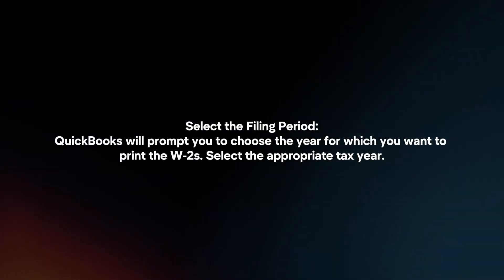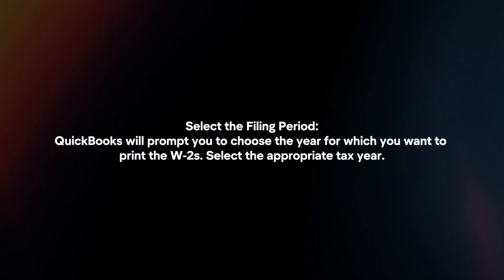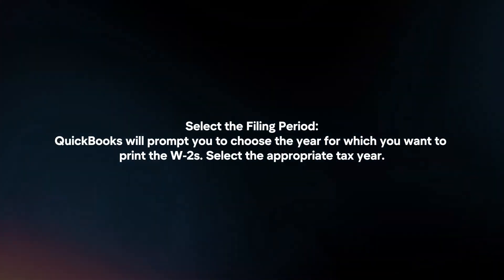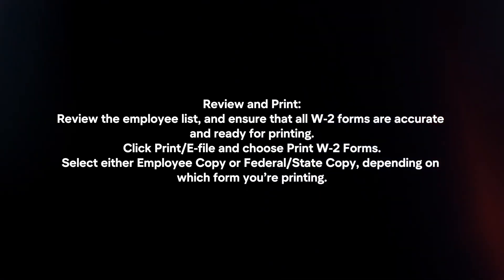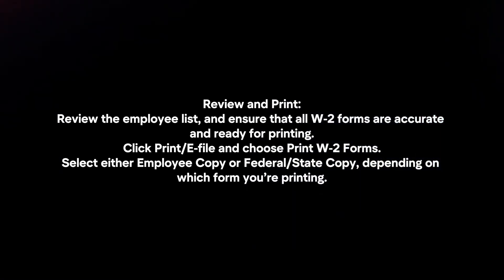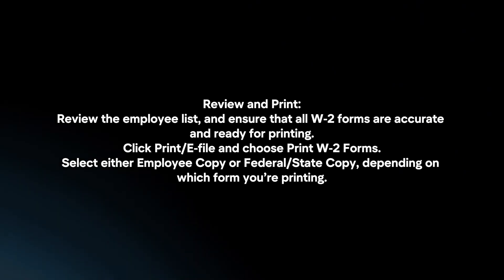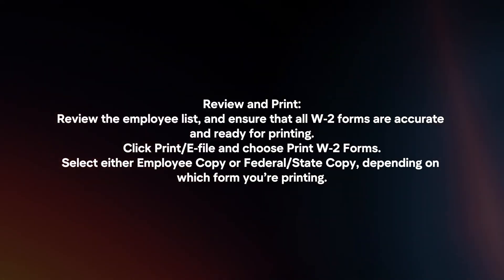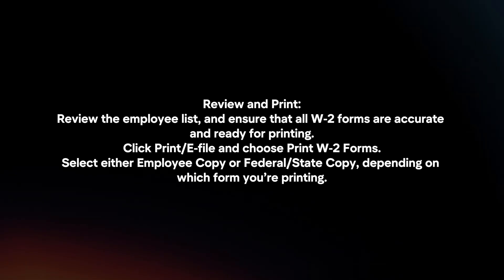Select the Filing Period. QuickBooks will prompt you to choose the year for which you want to print the W2s — select the appropriate tax year. Then review the Employee List and ensure all W2 forms are accurate. Click Print/e-File and choose Print W2 Forms, selecting either Employee Copy or Federal/State Copy depending on which form you're printing.